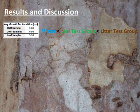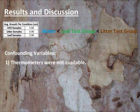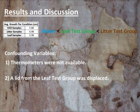But before we go jumping to any conclusions, let's list a few confounding variables that could have played a role in our results. One: we did not have a thermometer available to measure the temperature of the water when steeping the leaves and litter. This could mean that the temperature varied for each group, or it could mean that the water was too hot altogether and killed off any possible biochemicals from the eucalyptus. Two: after the seven days passed, we noticed that one of the lids to our petri dishes in the leaf test group was displaced, and the water had completely evaporated.